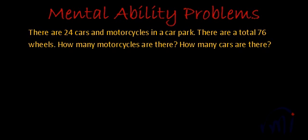Hi kids. Let's read out our problem statement. There are 24 cars and motorcycles in a car park. There are total 76 wheels. How many motorcycles are there and how many cars are there?